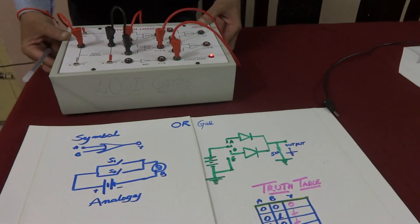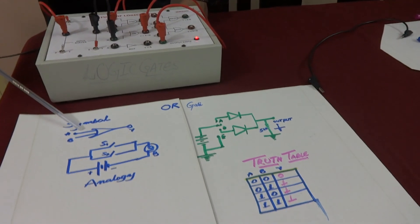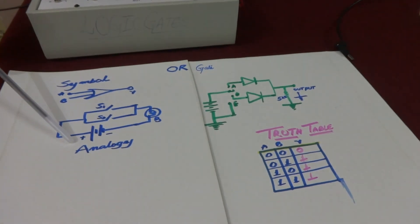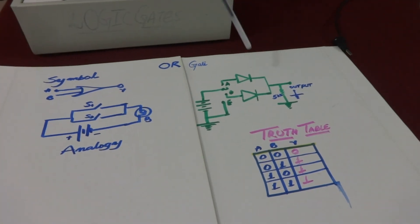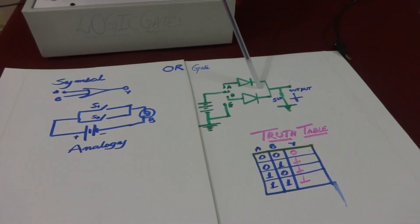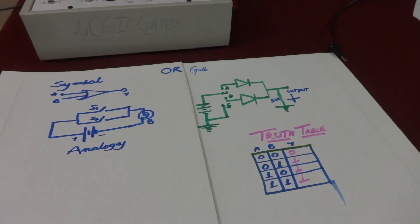Today we have verified the truth table for the OR gate. We briefly discussed the symbol, the analogy, how to realize the gate using a diode circuit, and finally verified the complete truth table.